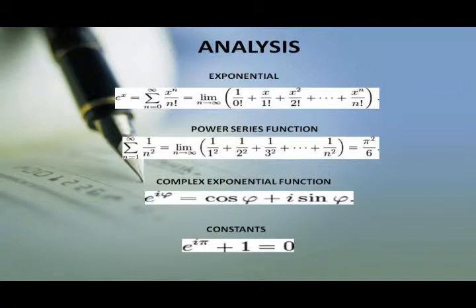A special case of the above formula is known as Euler's identity: e^(iπ) + 1 = 0, called the most remarkable formula in mathematics by Richard Feynman. It brings together single uses of the operations of addition, multiplication, exponentiation, and equality, along with the important constants 0, 1, e, i, and π.